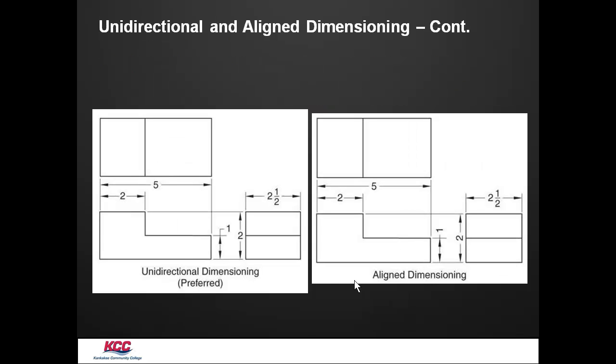Here's some other examples of unidirectional dimensioning. All the numbers are read from the bottom of the drawing. Over here in aligned, they are read from the bottom or the right side.